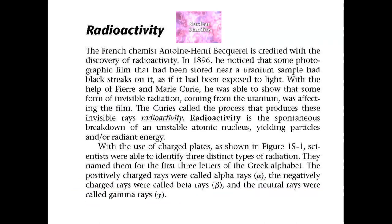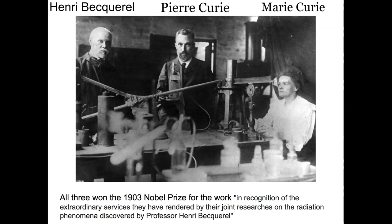Moving on to radioactivity. The three major players beyond Wilhelm Röntgen were Henri Becquerel, Pierre Curie, and Madame Curie. All three won the Nobel Prize in 1903 for their work in recognizing that radiation was a phenomenon — that there was something called radiation or energy emitted from certain atoms. It was discovered first by Henri Becquerel, and then Marie Curie and Pierre Curie, that wife-and-husband team, helped understand what radioactivity was and which elements were responsible.